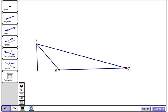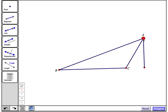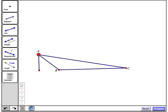Now I'll construct the altitude of the triangle right there. And as I drag point A, yes, indeed, the altitude always exists.